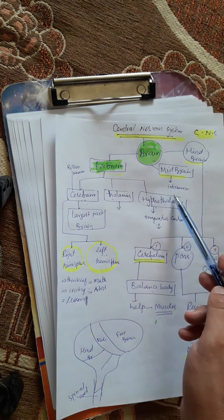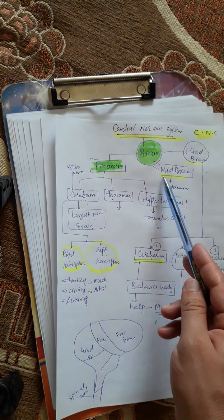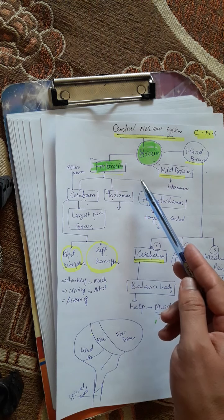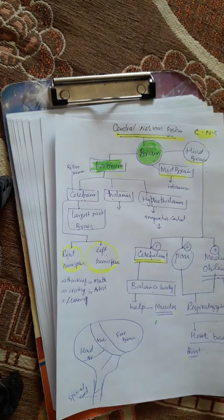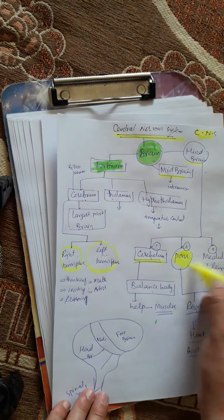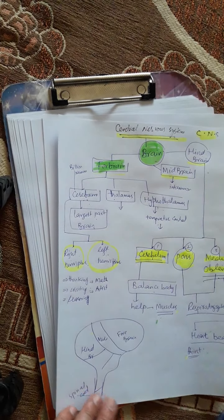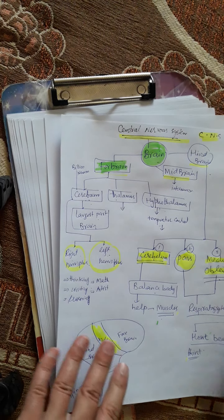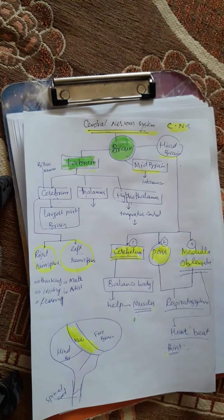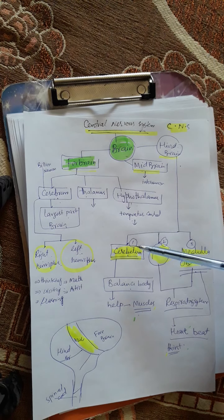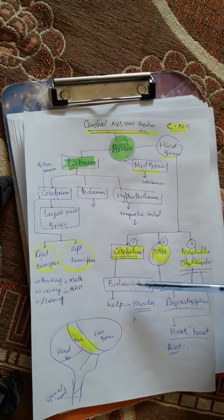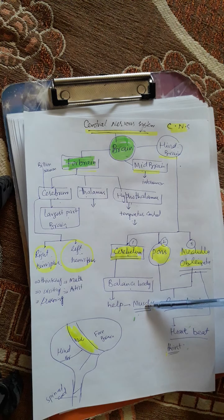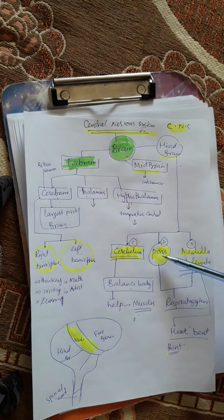Similarly, the midbrain contains interneurons, and the midbrain acts as a bridge between the forebrain and the hindbrain. Similarly, we have the hindbrain. The hindbrain has three parts: cerebellum, pons, and medulla. The cerebellum maintains the balance of the body with the help of muscles and bones, so the balance of the body is due to the cerebellum.